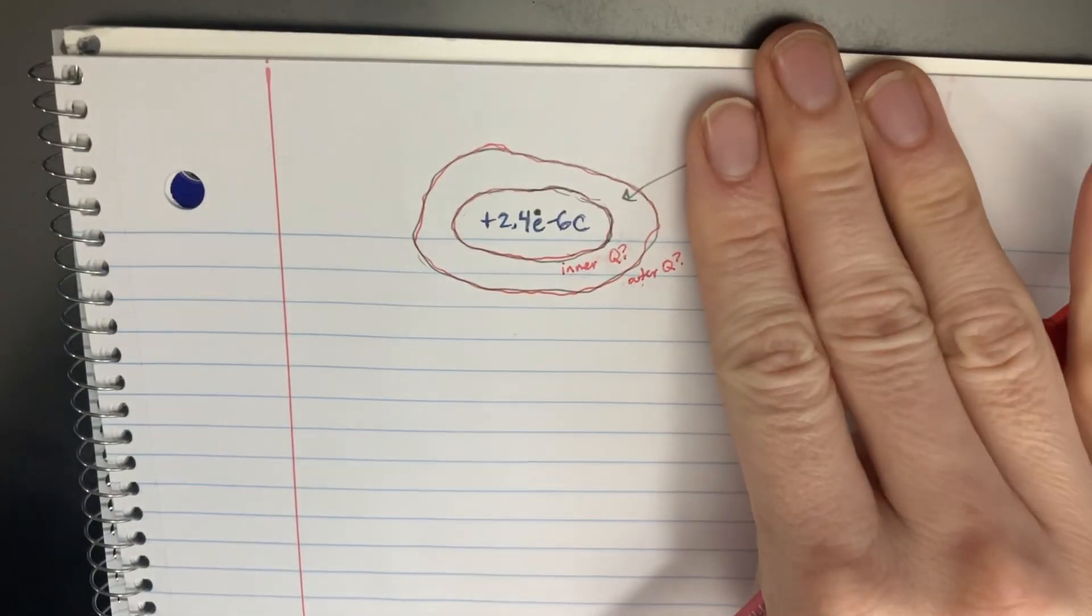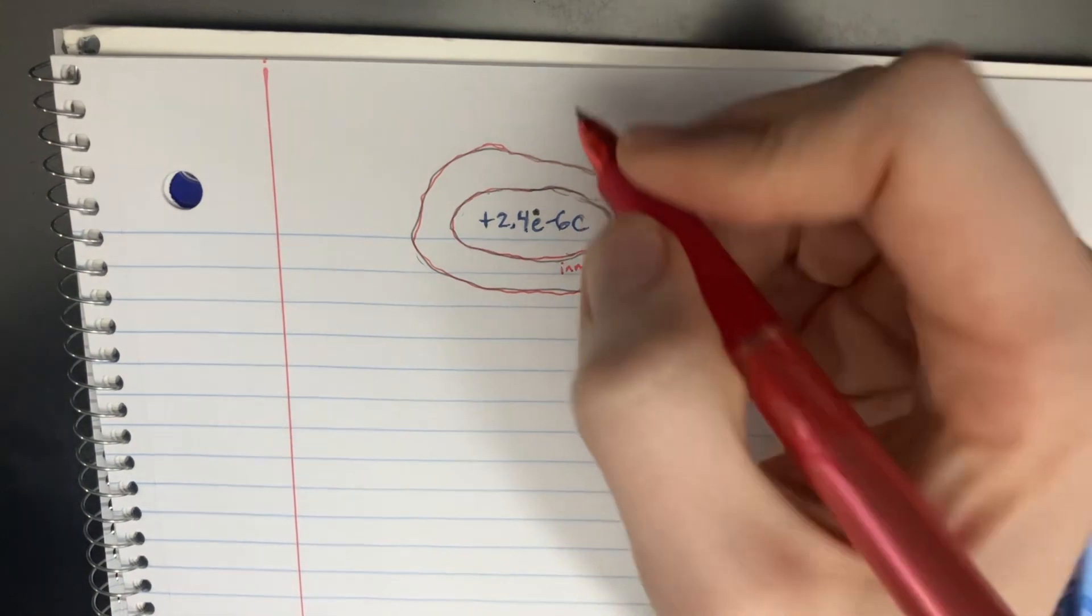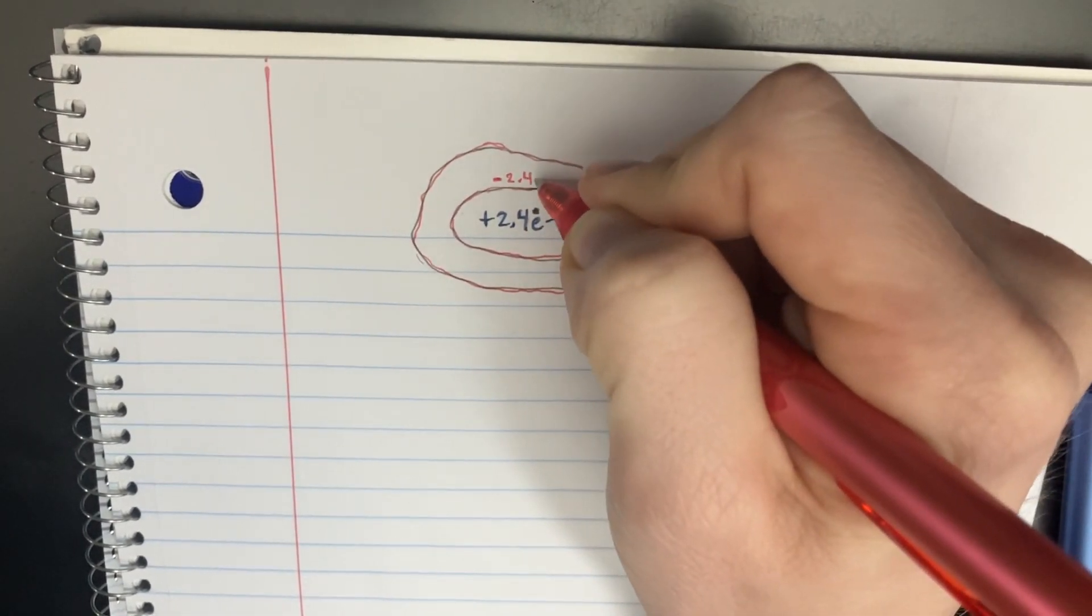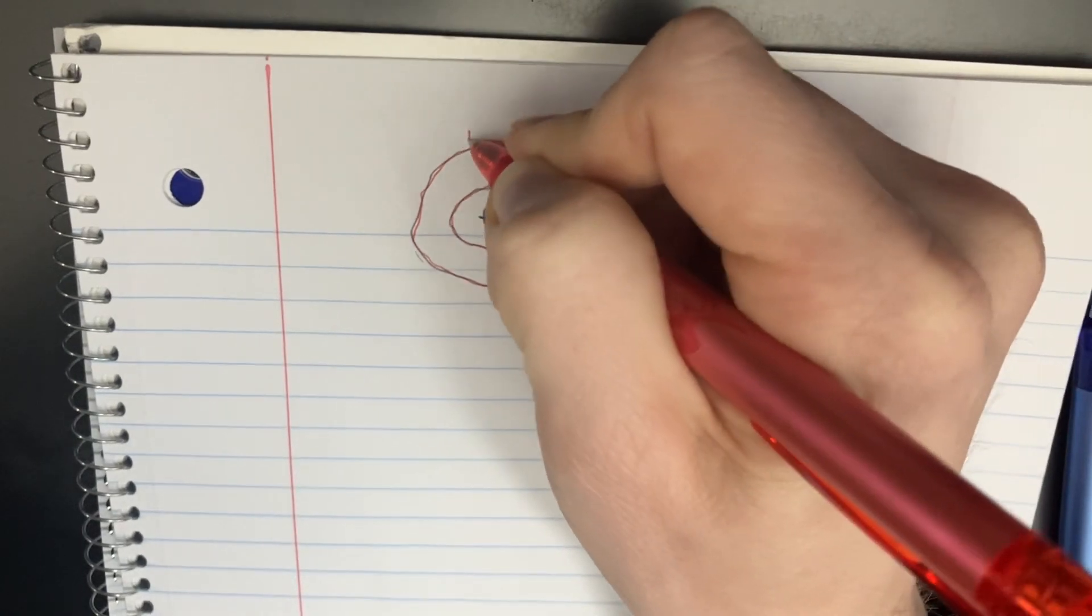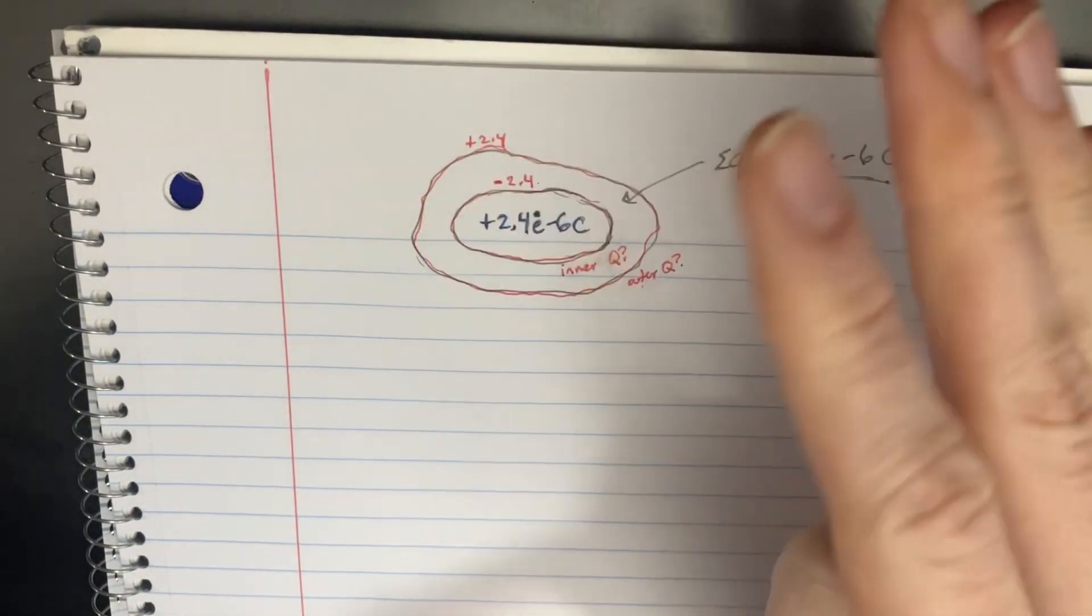Now, let's forget about this net 15 right now. And let's ask yourself, if this was a neutral conductor, then what would happen is we would get a negative 2.4 on the inner, and then we would get a positive 2.4 on the outer. Because it was neutral, it would just balance out to nothing.